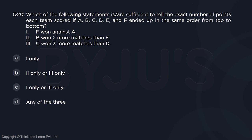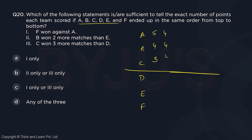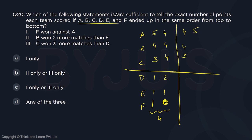The last question: which statement alone is sufficient to tell the exact number of points each team scored, given A, B, C, D, E, F ended up in that order? Quickly writing the cases: top can be 5, 4, 3 or 4, 4, 4; bottom can be 1, 1, 1 or 2, 1, 0. That is 4 cases in the first scenario. Or top is 4, 4, 3 or 5, 3, 3, and bottom is 2, 1, 1 or 2, 2, 0 — another 4 cases, giving 8 total.